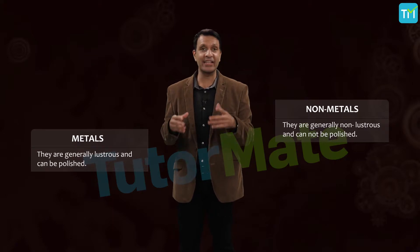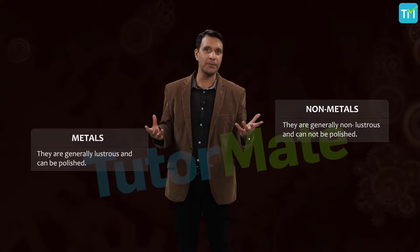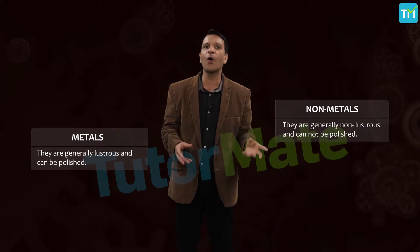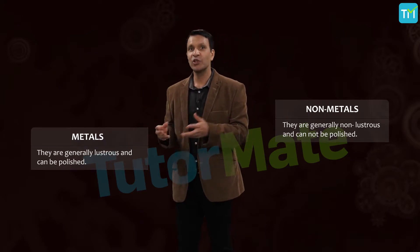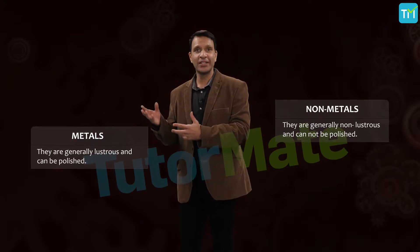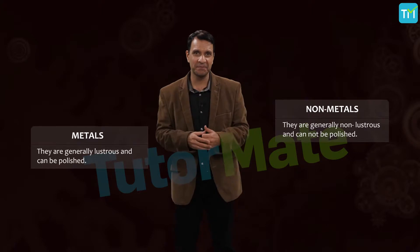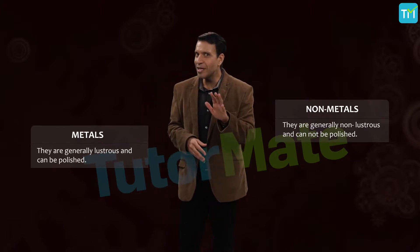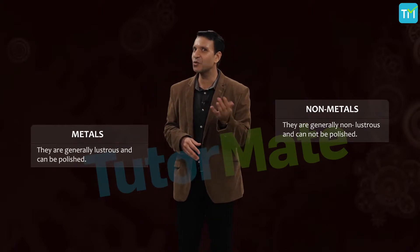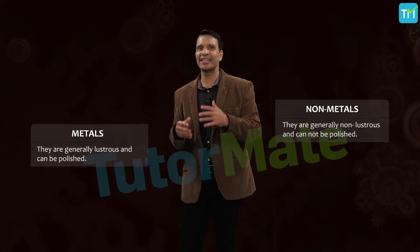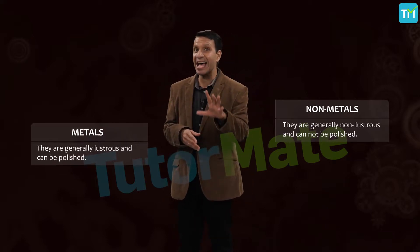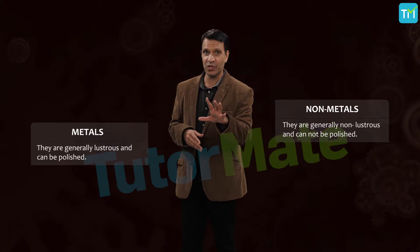Have you heard the phrase 'all that glitters is not gold'? We have diamond, which glitters, but it is a non-metal. Carbon is a non-metal that can exist in different forms — each form is called an allotrope, and diamond is an allotrope of carbon. Remember, iodine is an exception in the class of non-metals since it has lustre.